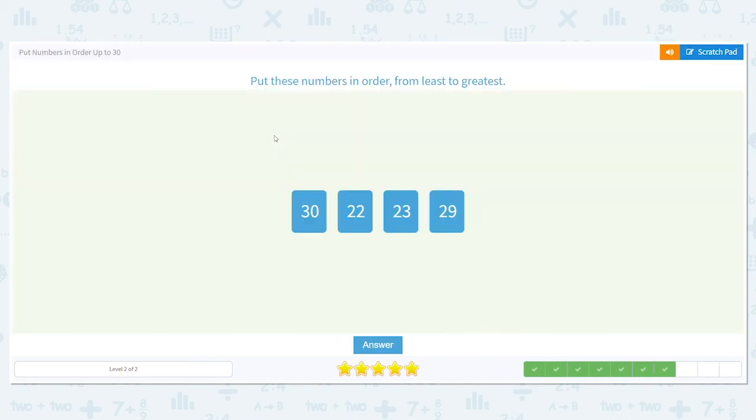Let's do another one. 30, 22, 23, 29. We want them from least to greatest. Now there's no single digits this time. They're all double digits. Two digits. Okay. So I see that I have a 30. Is that going to be the lowest or the highest? The least or the greatest? It's going to be the greatest.